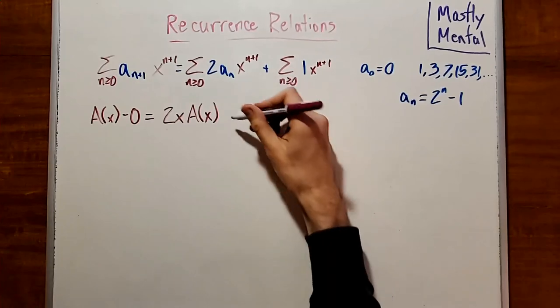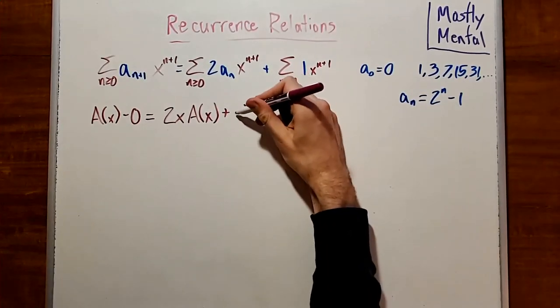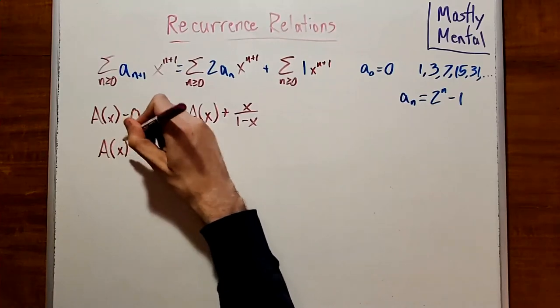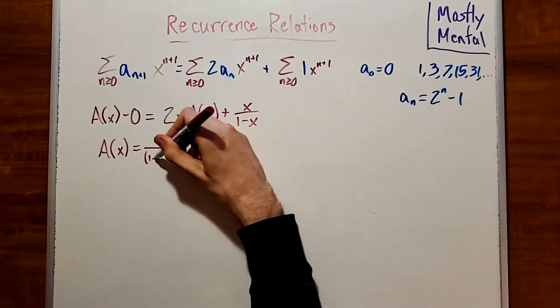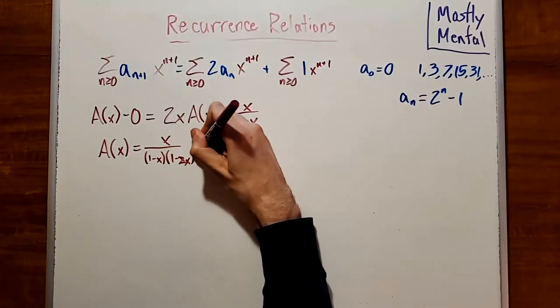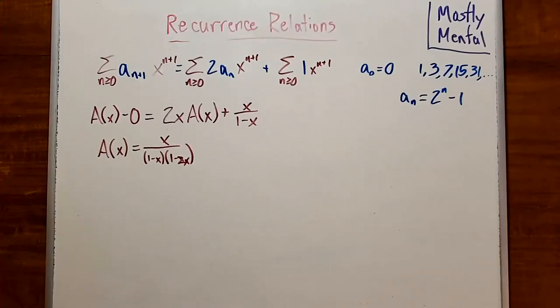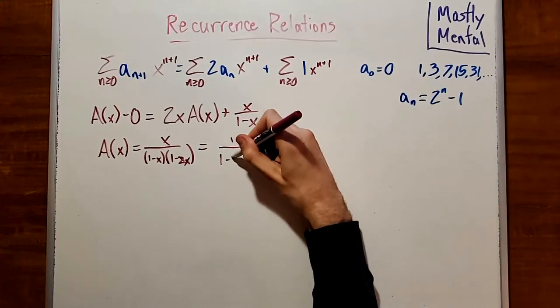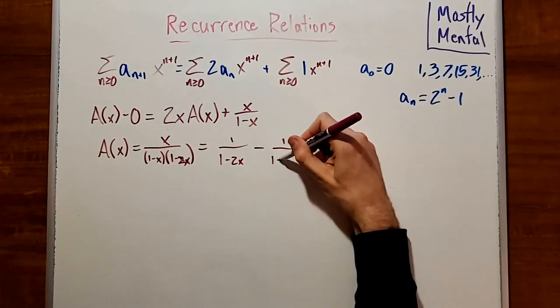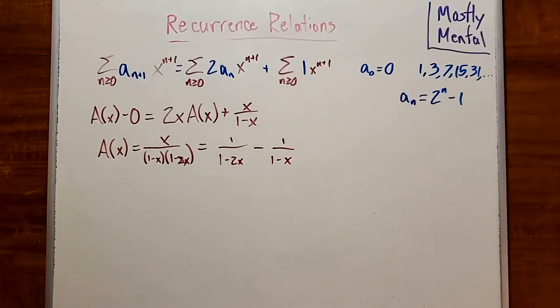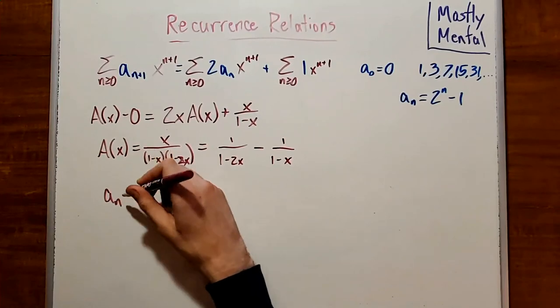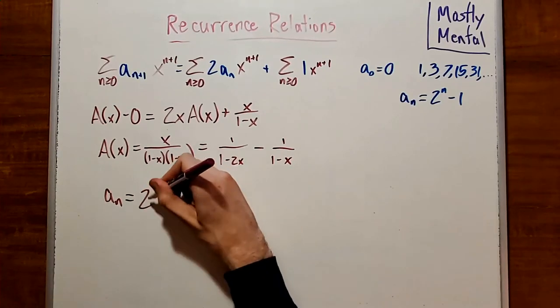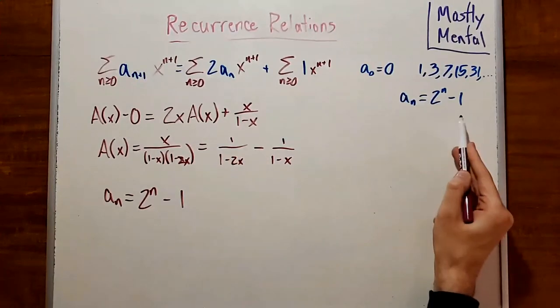And this last sum here is just a geometric series, so we know that's x over 1-x. Solving, we get A(x) equals x over (1-x)(1-2x). If we decompose it using partial fraction decomposition, we can rewrite this as 1 over 1-2x minus 1 over 1-x. And then taking the coefficients, we get a_n is the coefficient of x^n in this thing, which, since these are geometric series, is going to be 2^n minus 1, which agrees with what we saw earlier.